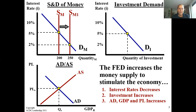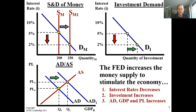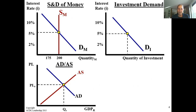The money supply increases from SM1 to SM2. Therefore, the interest rate decreases. It's extrapolated over down to 2%. The interest rate drops to 2% on the investment demand diagram, and therefore the quantity of investment demanded increases at 2%. Then the aggregate demand curve shifts to the right, and the price level and quantity increase. Be able to model these side by side like this.